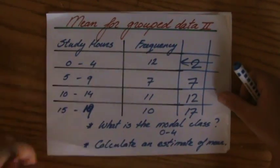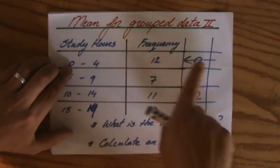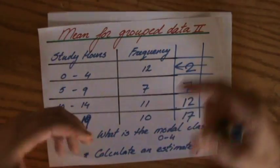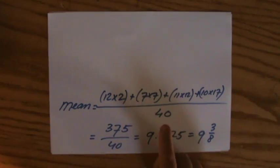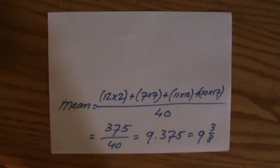Okay, so with those grouped data, take the midpoint, multiply that by the frequency, and of course divide it all in the end by the amount of values. All right.